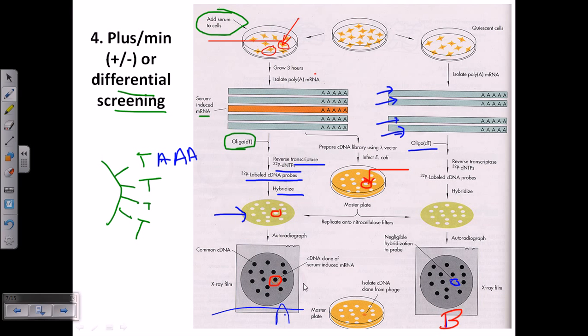That means that the cells of this position are actually expressing that particular gene of interest. This is the labeled cDNA of our interest. That's how we can, by comparing it in two different cases, one is adding serum, another one is without the serum, we can actually compare their results and can tell where is our gene.